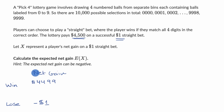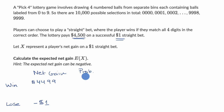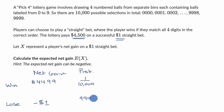Now let's think about the probabilities of each of these situations. The probability of a win is one in 10,000. And the probability of a loss is 9,999 out of 10,000.